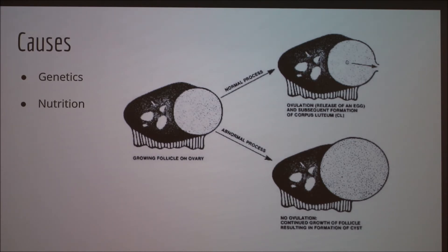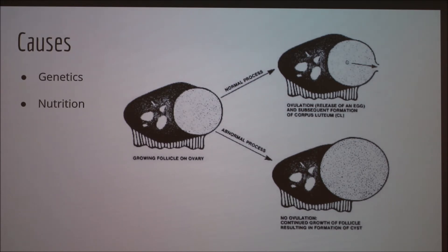Previous studies also indicate that you can address this problem through culling at the sire when a daughter shows ovarian cysts, and that can reduce the overall occurrence of this problem. However, it's also very likely that some of the females that show ovarian cysts are also high producers, so it may come at a cost to decide whether or not to breed these specific individuals.